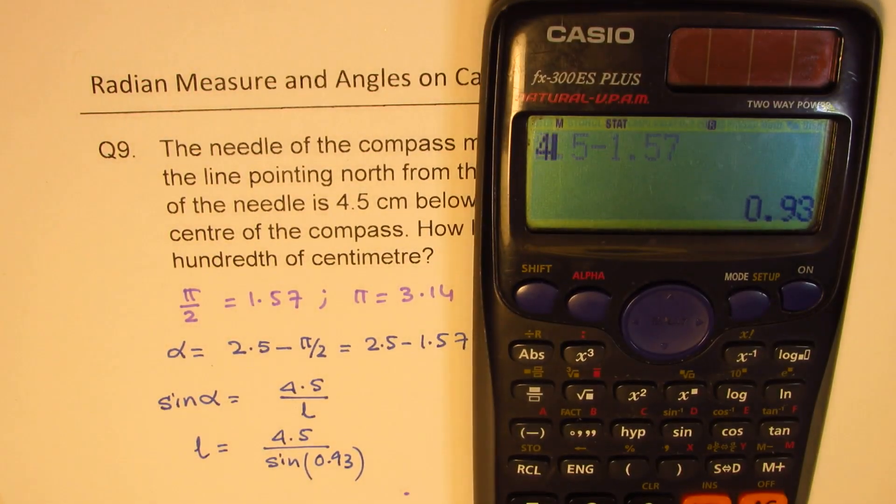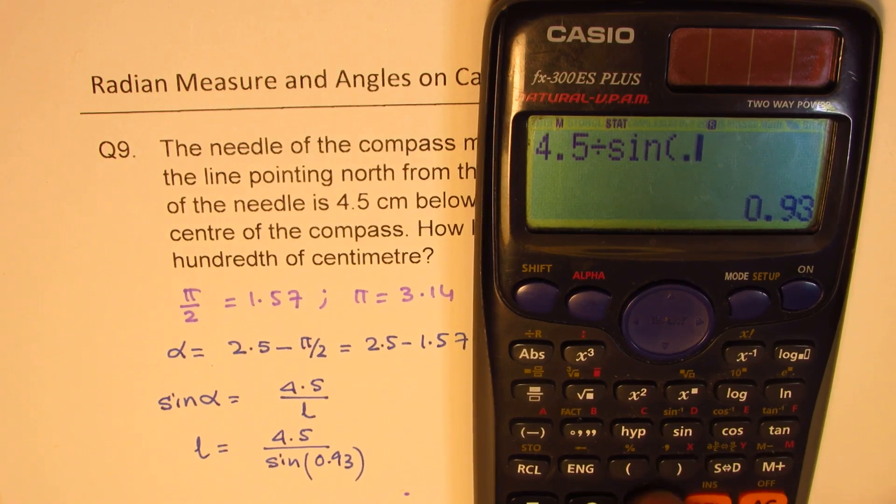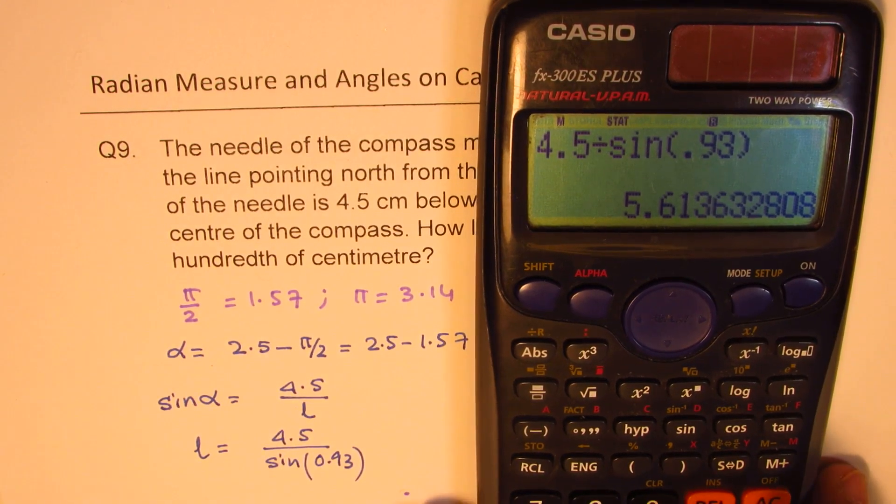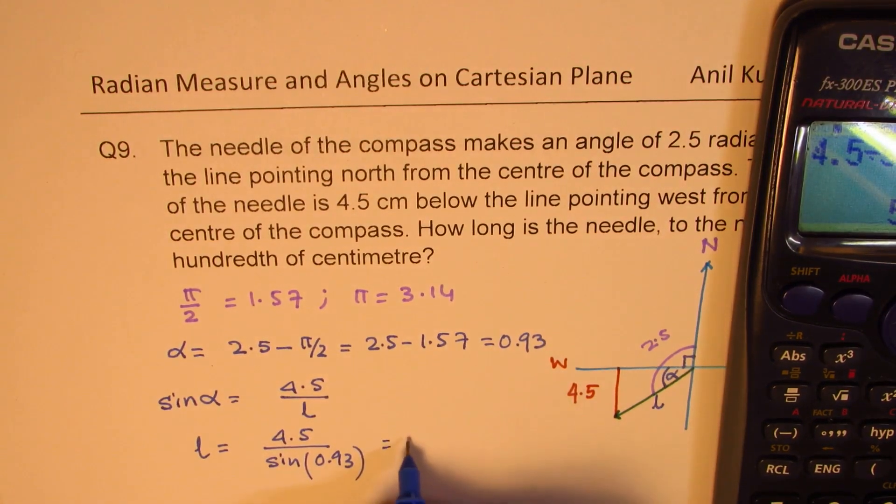So, we have 4.5 divided by sine of 0.93, which is 5.613, 5.613.